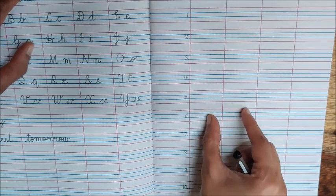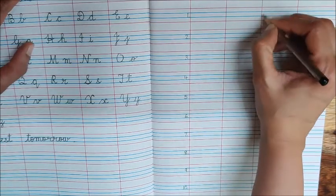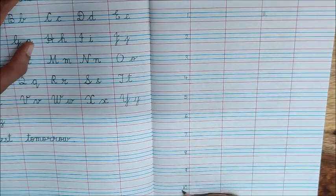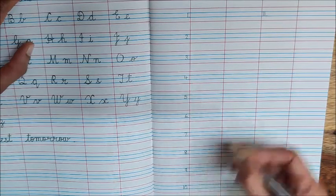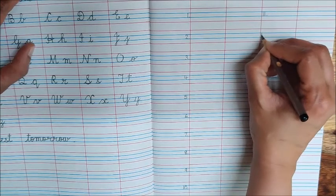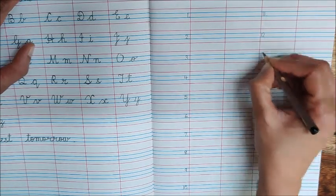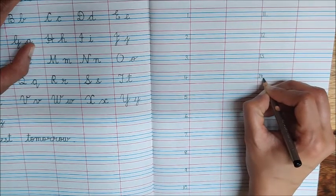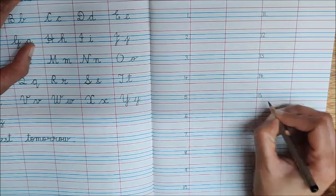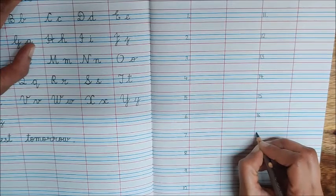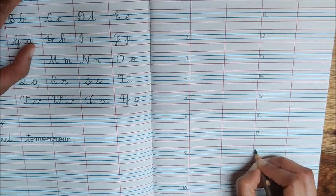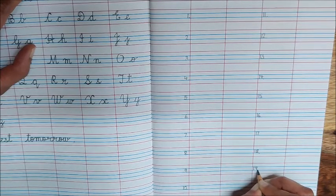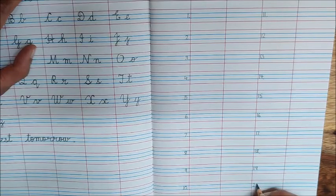After writing ten, you will leave this column, then leave this column also. You have to leave two columns, and then in this column near the red line write down here eleven dot, twelve dot, thirteen dot, fourteen dot, fifteen dot, sixteen dot, seventeen dot, eighteen dot, nineteen dot, twenty dot.